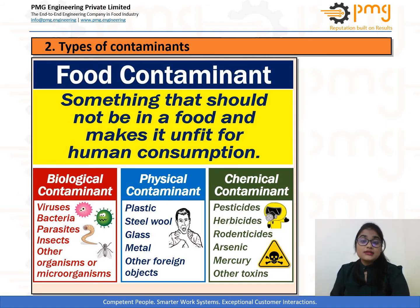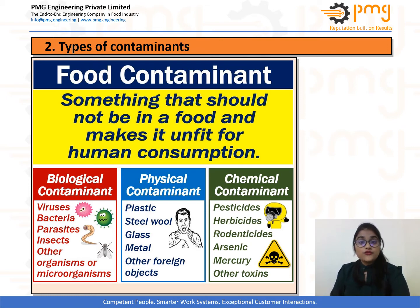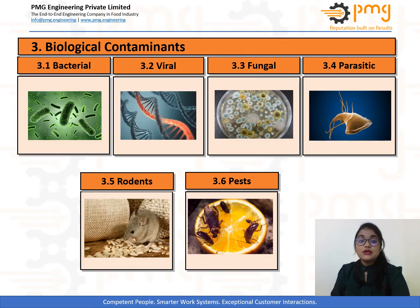There are basically three different types of food contaminants that may occur in food: biological contaminants, chemical contaminants, and physical contaminants. The presence of any one of these contaminants may lead to a reduction in food quality and composition. Let us now discuss the first contaminant, that is biological contaminants.